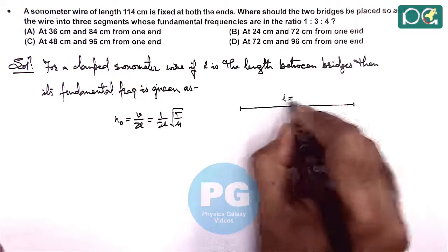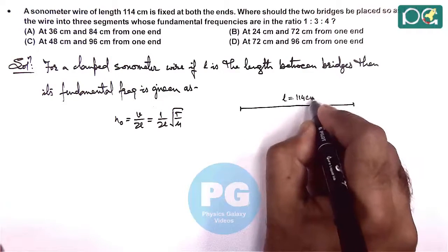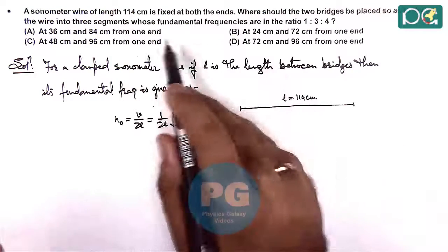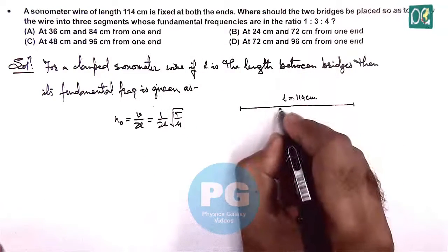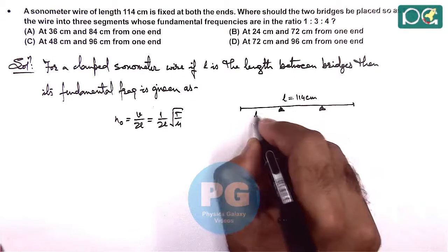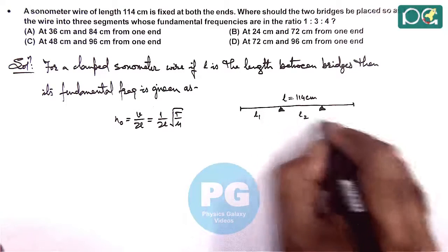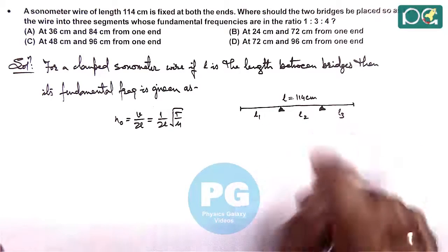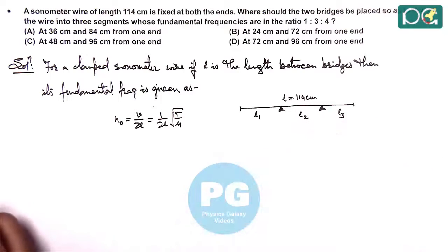The wire of length 114 centimeters has two bridges placed in between, say one here and another here, dividing it into segments. Now, L₁, L₂, and L₃ are the three lengths.